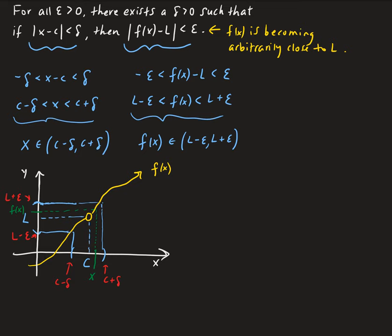In the next video, I'm going to provide an example where you're given a specific epsilon and you want to find the corresponding delta value — it's basically just applying the definition straightforwardly. Then in the video after that, I'll show how we can use this idea to prove a limit, where we need to show that for every epsilon there's a delta neighborhood that depends on that epsilon.